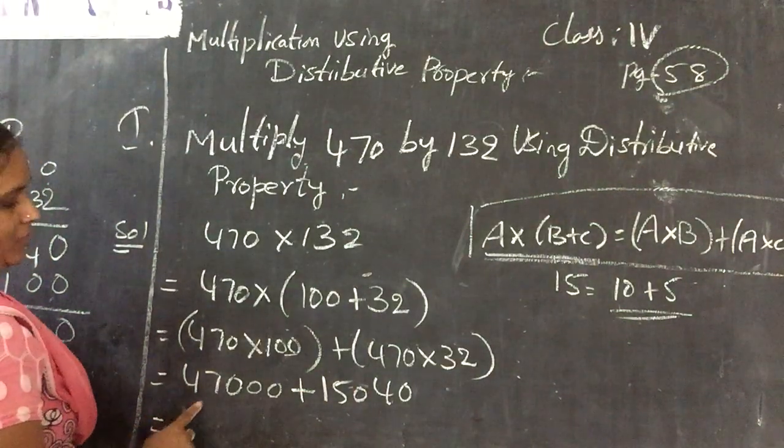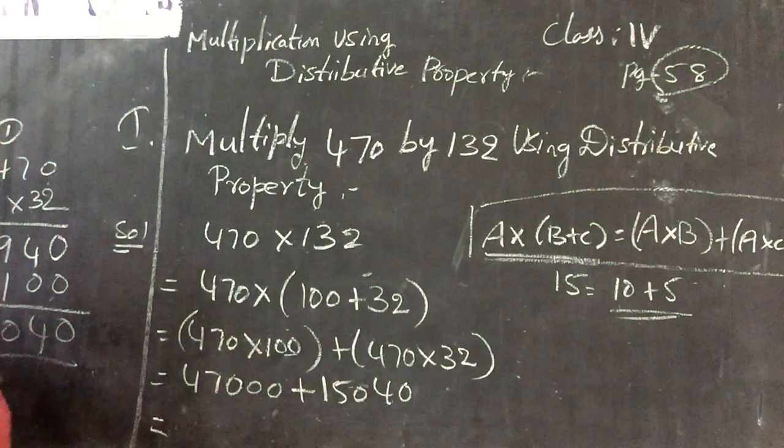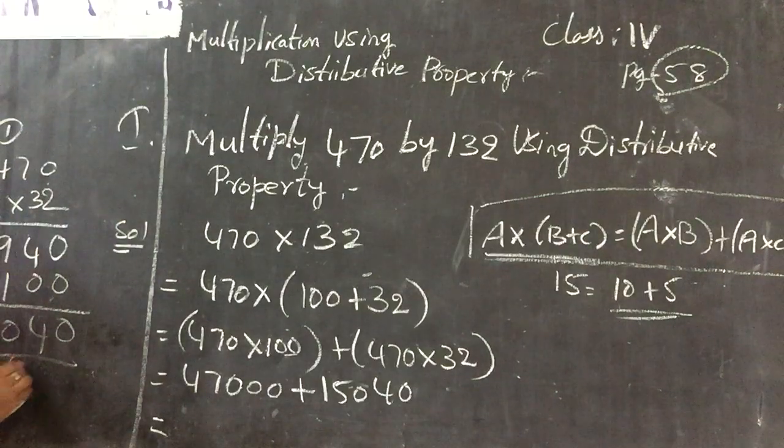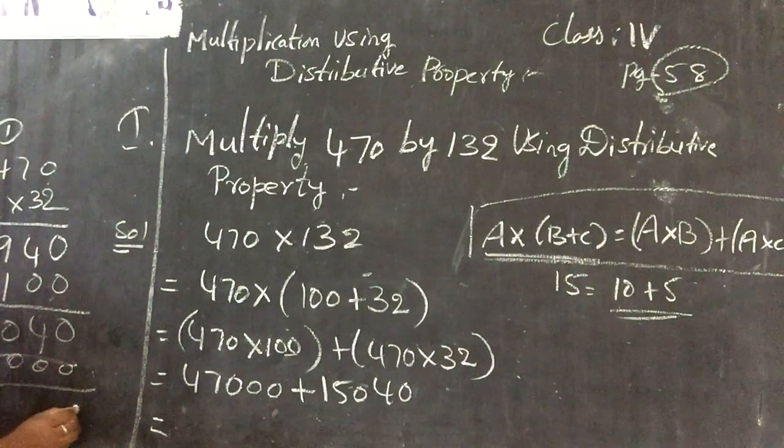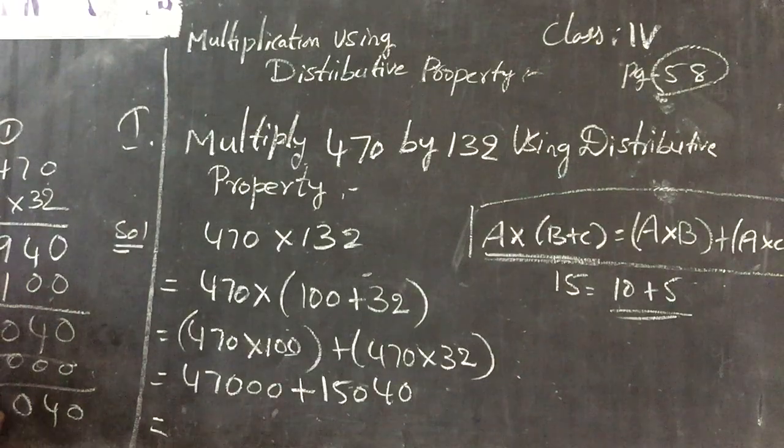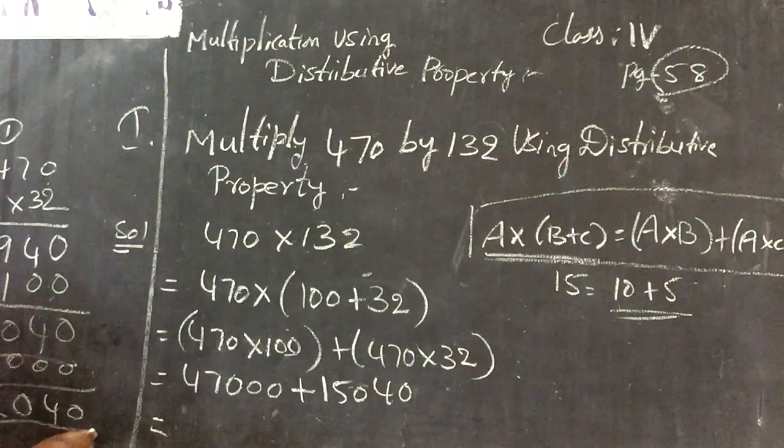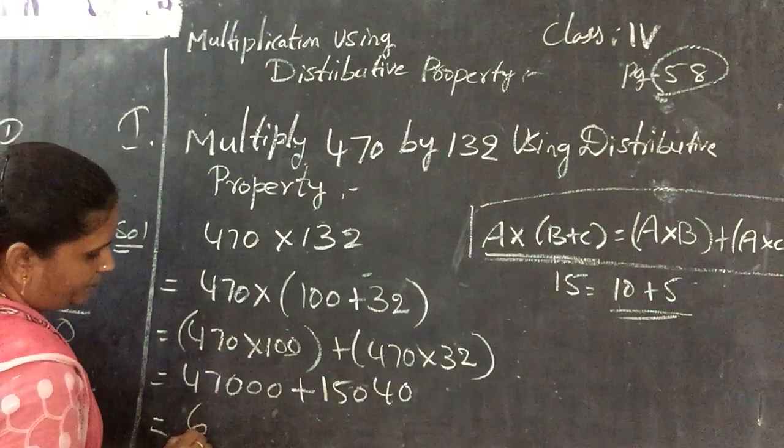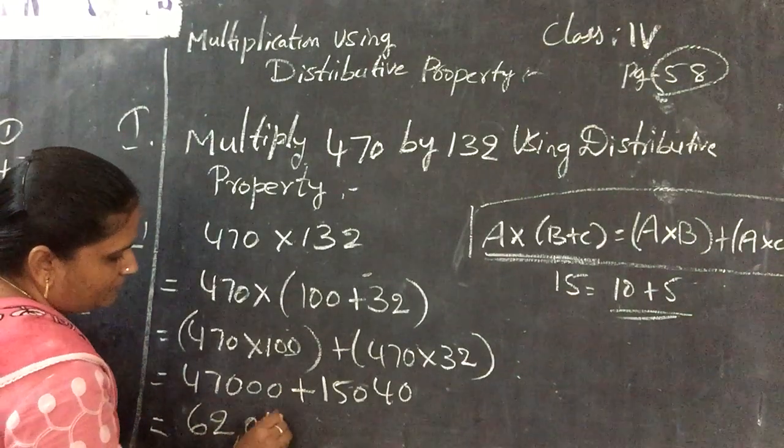Now do the addition of 47,000 plus 15,040. 47,000, if you do the addition, you will be get it 62,040.